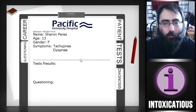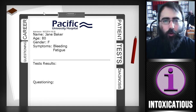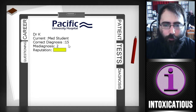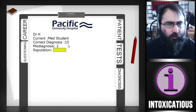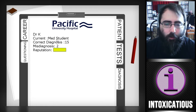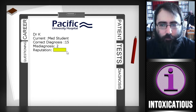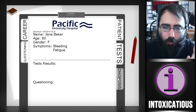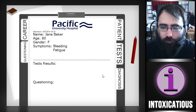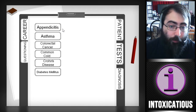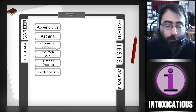I'm going to cut ahead now. So I've gone through — it looks like I need 15 correct diagnoses before I can move on to the next stage. Now I'm not pre-med, now I'm a med student, and I guess my reputation meter's moving — I can't really tell, maybe it's not fully functioning in the alpha. So now the game has added the common cold, Crohn's disease, and diabetes mellitus to the available diagnoses.